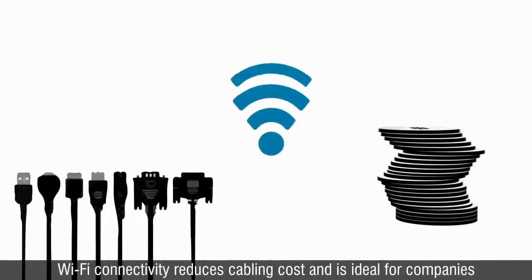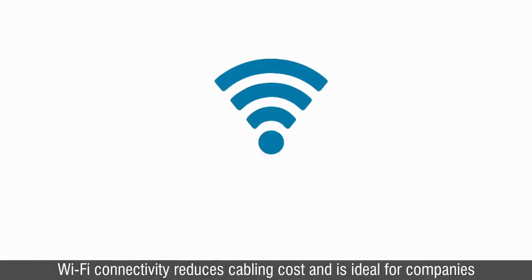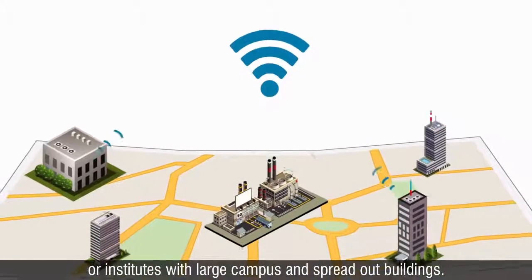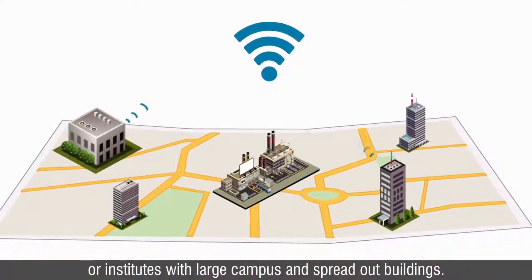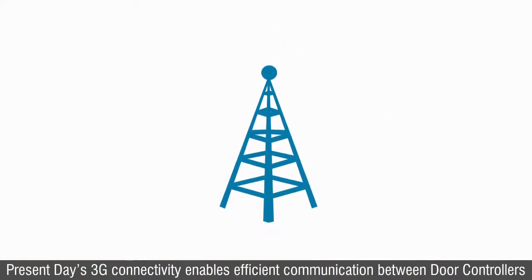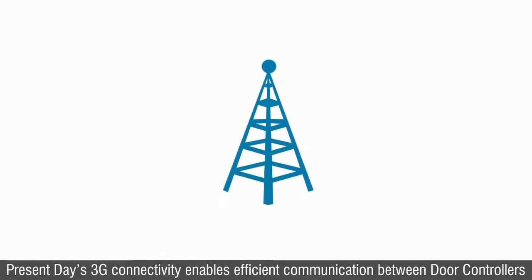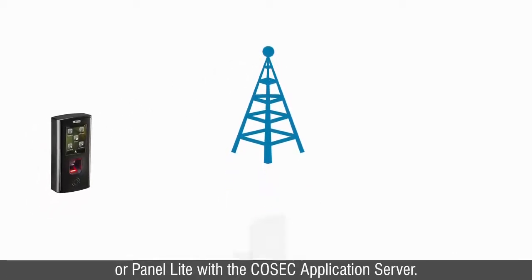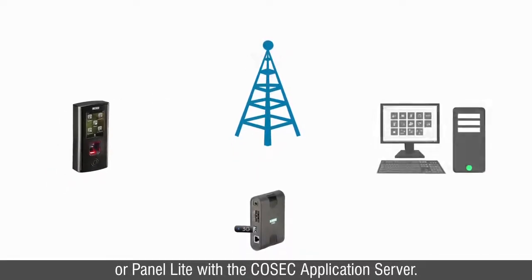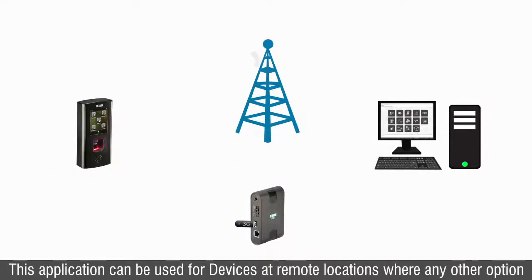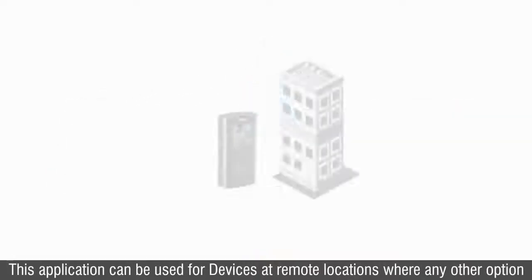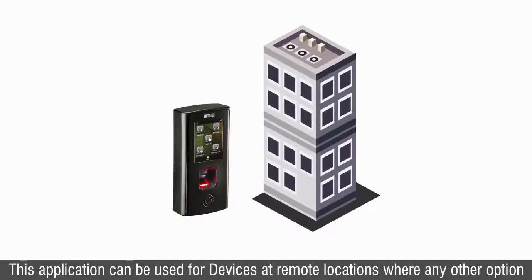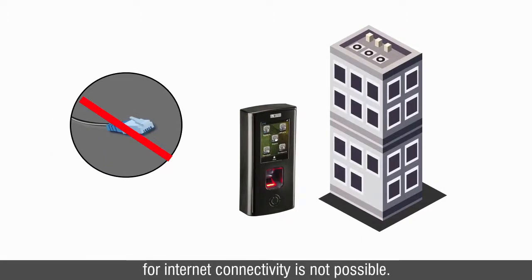Wi-Fi connectivity reduces cabling cost and is ideal for companies or institutions with large campuses and spread-out buildings. 3G connectivity enables efficient communication between door controllers or panel light with the Cosec application server. This option can be used for devices at remote locations where other options for internet connectivity are not possible.